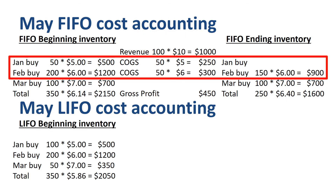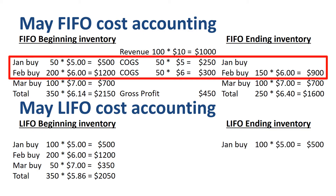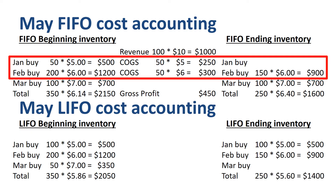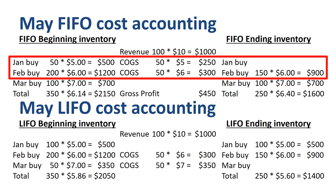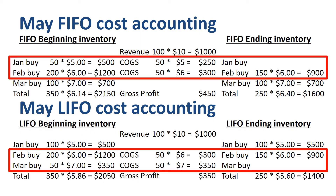Applying LIFO, what remains in inventory at the end of May is the full 100 units from the January buy, 150 units from the February buy, and no units from the March buy. In total, 250 units with a total purchase price of $1,400, so on average $5.60 per unit. If we prepare the income statement for May: revenue is 100 units times $10 = $1,000; COGS is 50 units times $7 = $350 plus 50 units times $6 = $300; and gross profit is $350. Out of the remaining March buy, we took all 50 units to COGS, and we took 50 units from the February buy into COGS. The remaining 150 units from the February buy go to the ending inventory.